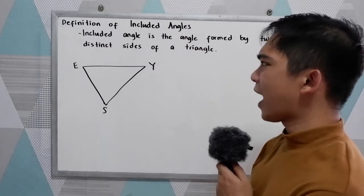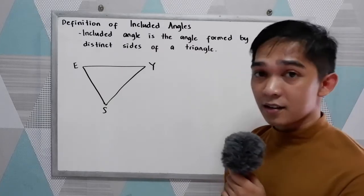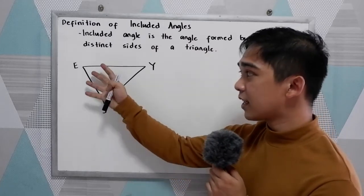So let's say we have this triangle. Let us find the included angles using the given triangle.